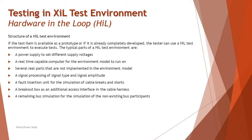We replace the controller subsystem with a Processor in Loop block which will have controller code running on the FPGA board. This step helps you identify whether the processor board is capable of running the developed control logic. If there are glitches, you can go back to your previous stage — that is SIL or MIL — to rectify them at any point in time.